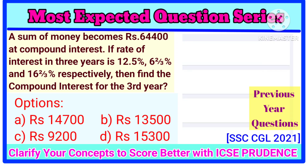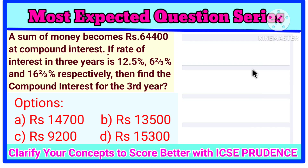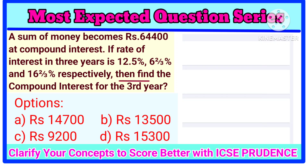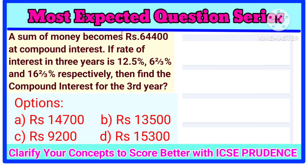Don't skip the video — watch the full video to learn how to solve this in the exam within a few seconds. Here it is given that a sum of money becomes Rs. 64,400 at compound interest. The rate of interest in 3 years are 12.5%, 6⅔%, and 16⅔% respectively. Find the compound interest for the 3rd year. The amount after 3 years is given to be 64,400.